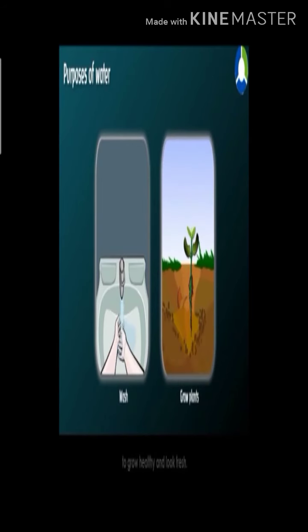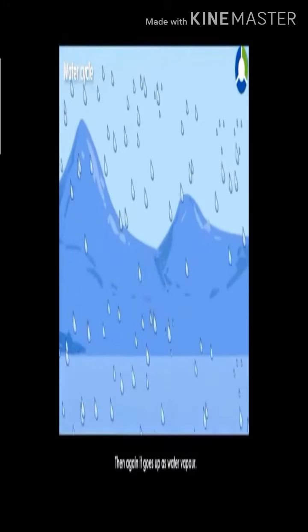Purposes of water: water is useful to us in many ways. We use water for many purposes like drinking, cooking, bathing, to wash away dirt, and water is needed for plants to grow healthy and look fresh. The water cycle: water vapor goes up into the air and cools to form tiny water droplets. These tiny droplets join to form clouds. When the water drops become heavy, they fall down as rain.